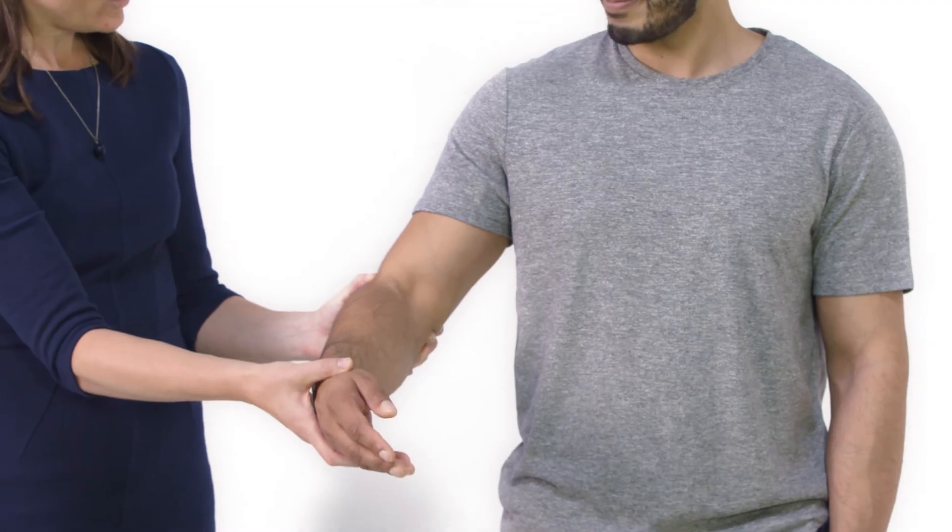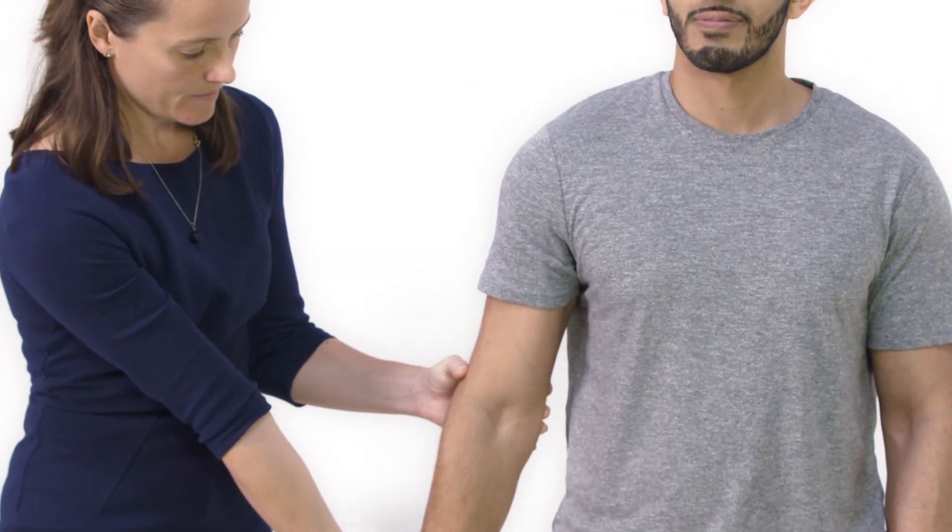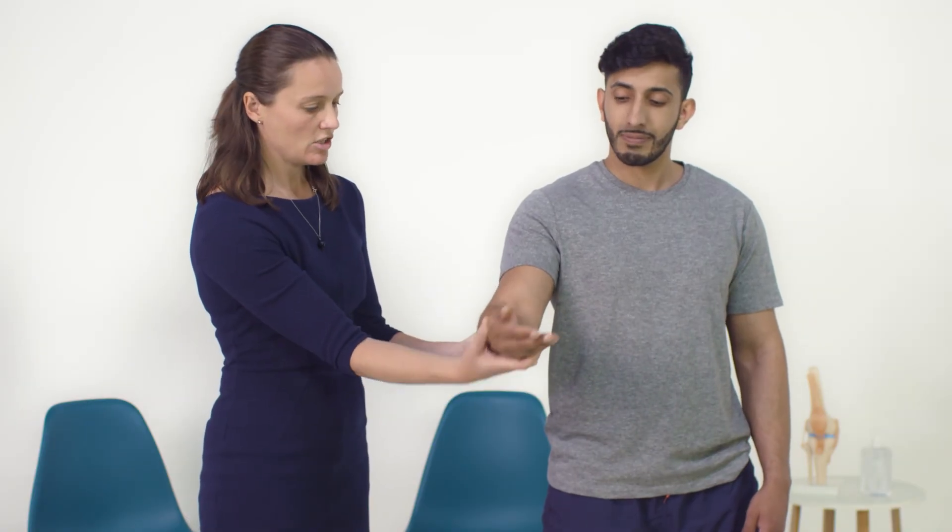And then I'm just going to test those movements again passively and while I'm doing that I'm going to hold the joint to see if there's any crepitus. So if you just let your arm relax. You can palpate the radial head while you're doing this pronation supination movement.